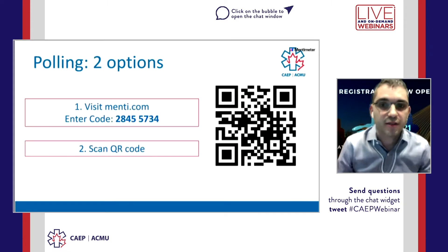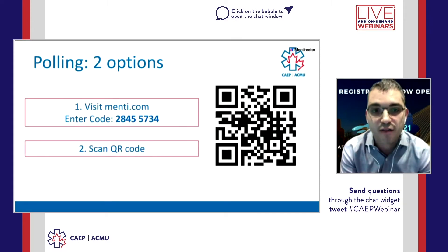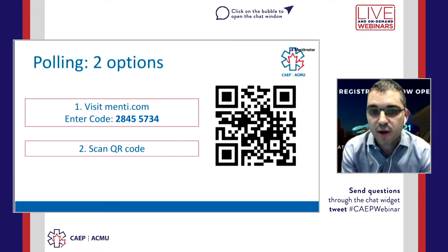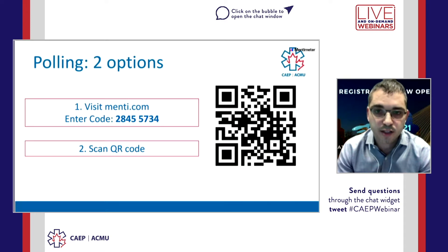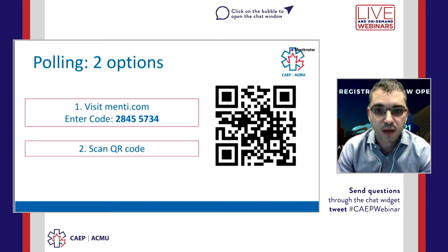To increase the interactivity of the session, we encourage you to use the chat feature to submit your questions, and we'll try to address as many of those as we can. We'll also be doing some audience polling throughout the webinar. For that, you'll need to access the Mentimeter website, which you can see here on the slide. You can either enter the code or scan the QR code. You'll be prompted to enter the code when you log in, and as the questions come up, you'll be able to plug in your answers.